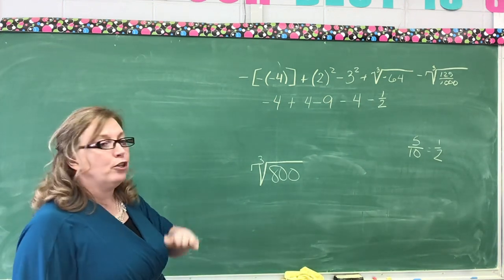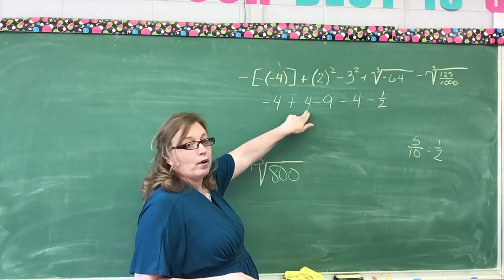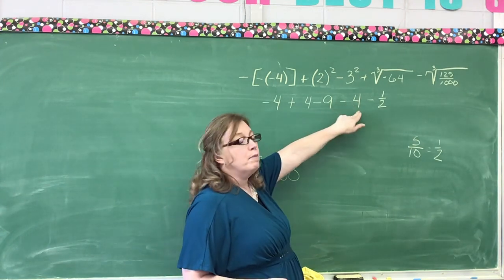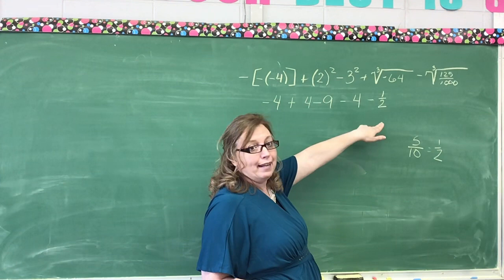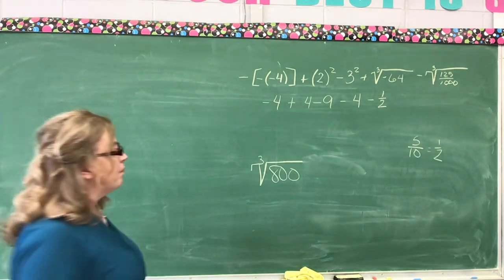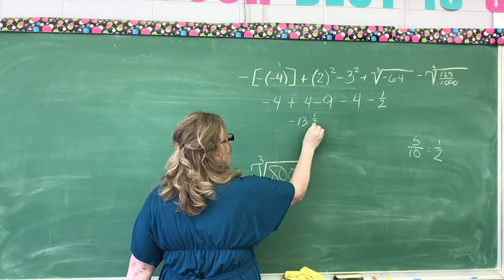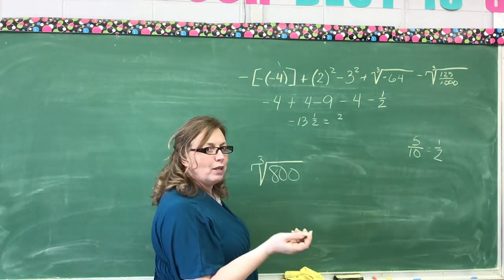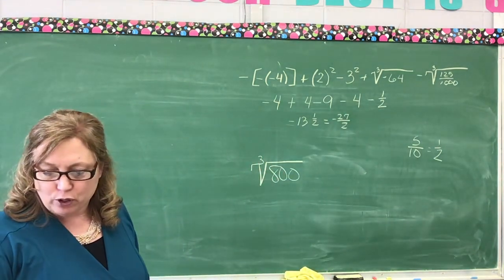Now, we simply do what? Using algebraic addition, we finish our problem. -4 + 4 is 0. 0 + -9 is -9. -9 + -4 is -13. -13 + -1/2 is -13 and 1/2. You might have said it was -27/2 because oftentimes in algebra we leave as improper fractions.